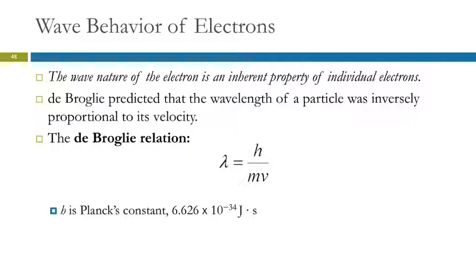So electrons behave like waves. And that wave nature is an inherent property of individual electrons. So an individual electron is a particle, but it is also a wave.